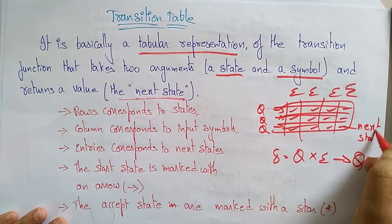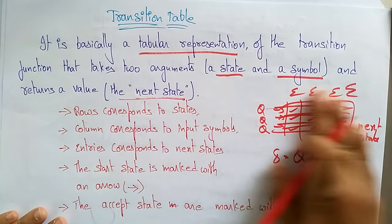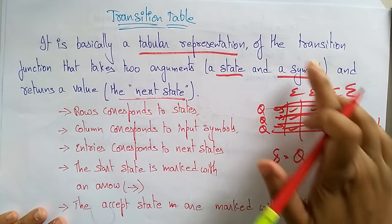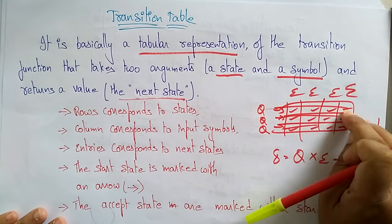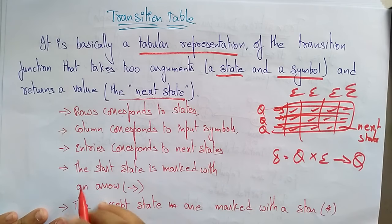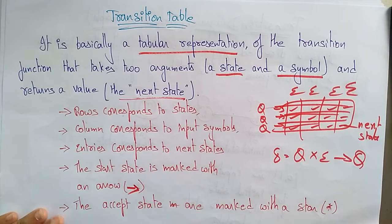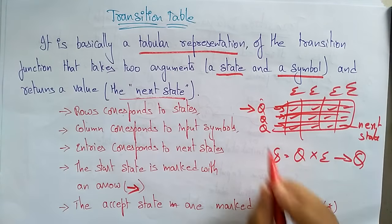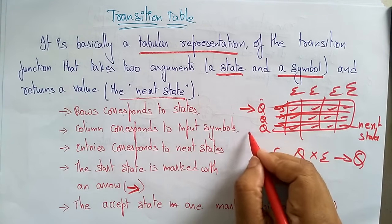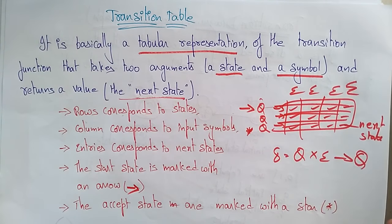Remember: rows represent states, columns represent input symbols, and entries represent the next state. The start state is marked with an arrow, and the acceptance state (final state) should be marked with a star. Keep these conventions in mind when implementing the table.